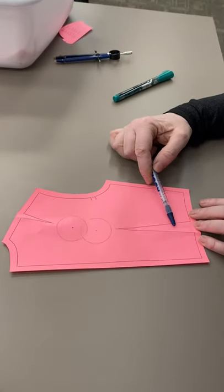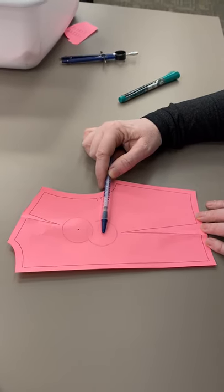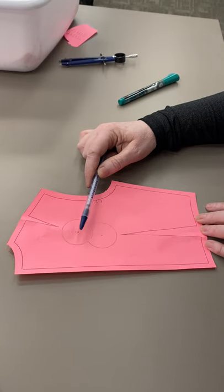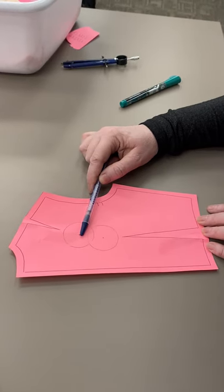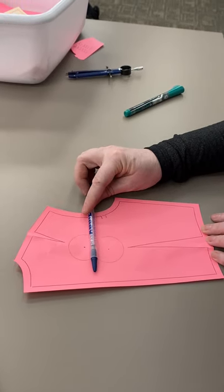We have a dart coming up from the waist for shaping and it has an apex point at this circle. Somewhere between these two points is going to be the shoulder blade. We're just going to make an educated guess that the shoulder blade is right there.